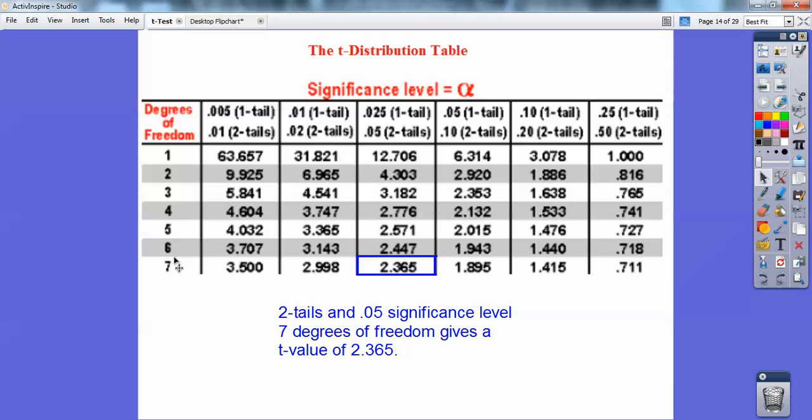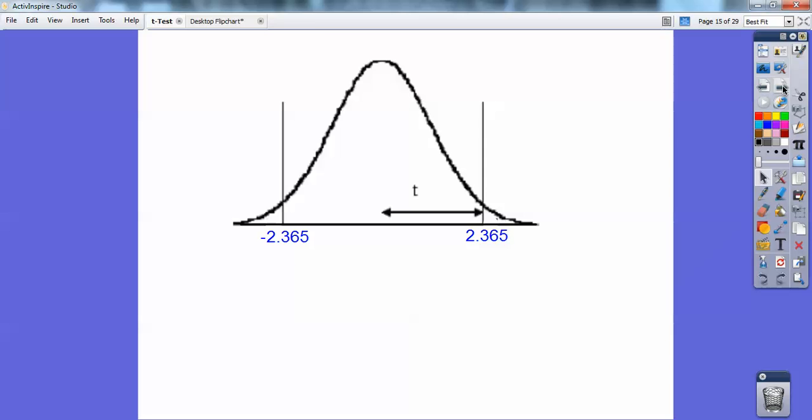So degrees of freedom of 7, and then .05, a two-tail. My t-value is going to be 2.365 on both sides. I want to calculate to see if my t-value falls somewhere inside of here, then it's going to fail to reject H0. But if my t-value falls either above the cutoff, 2.365, or below the cutoff, then that would be significant enough evidence to reject H0 and accept the alternative hypothesis.